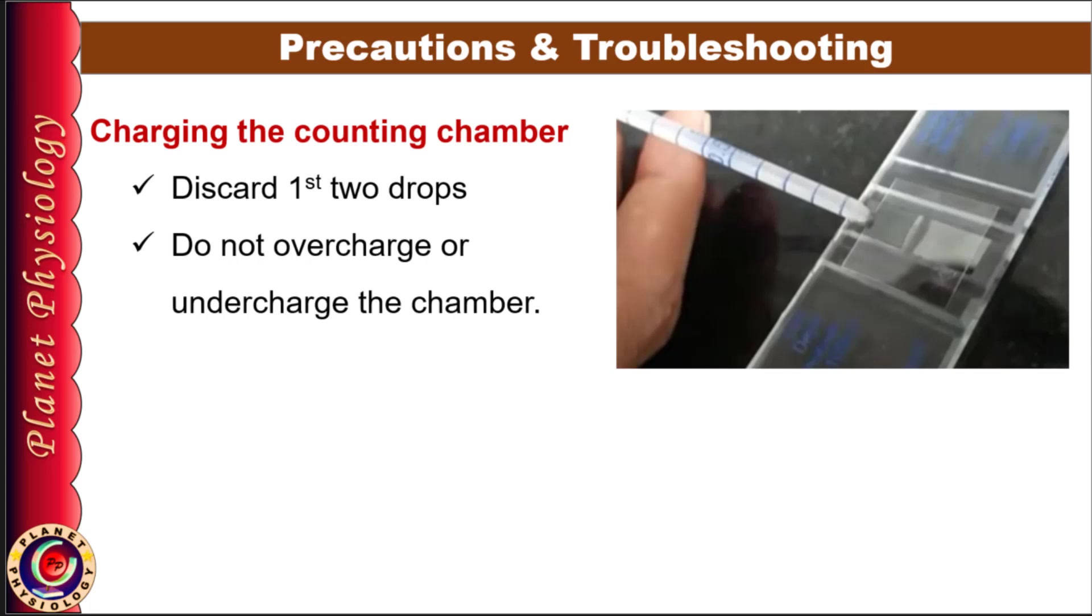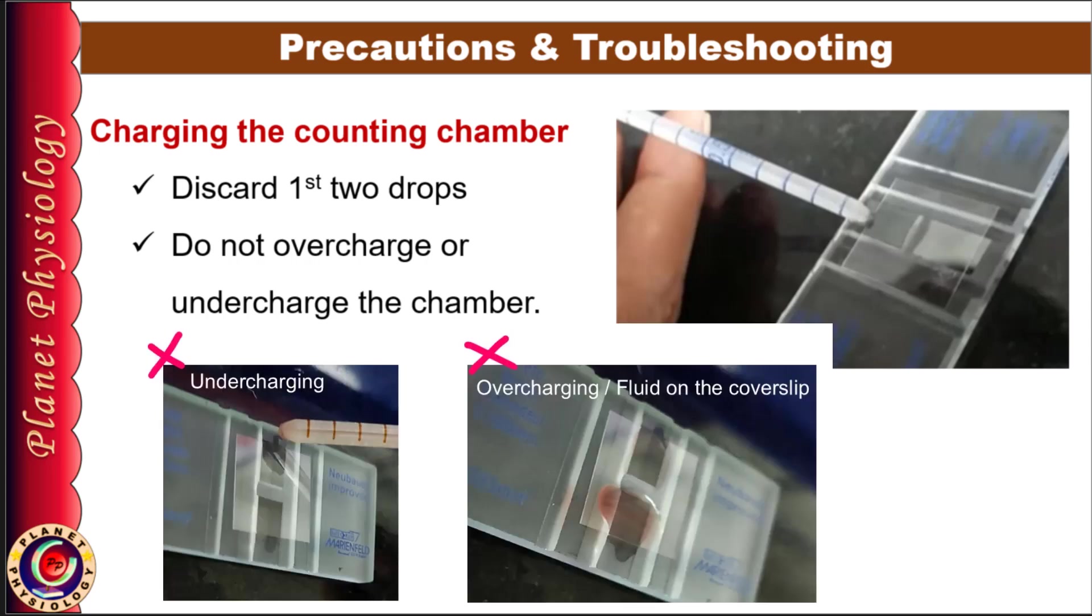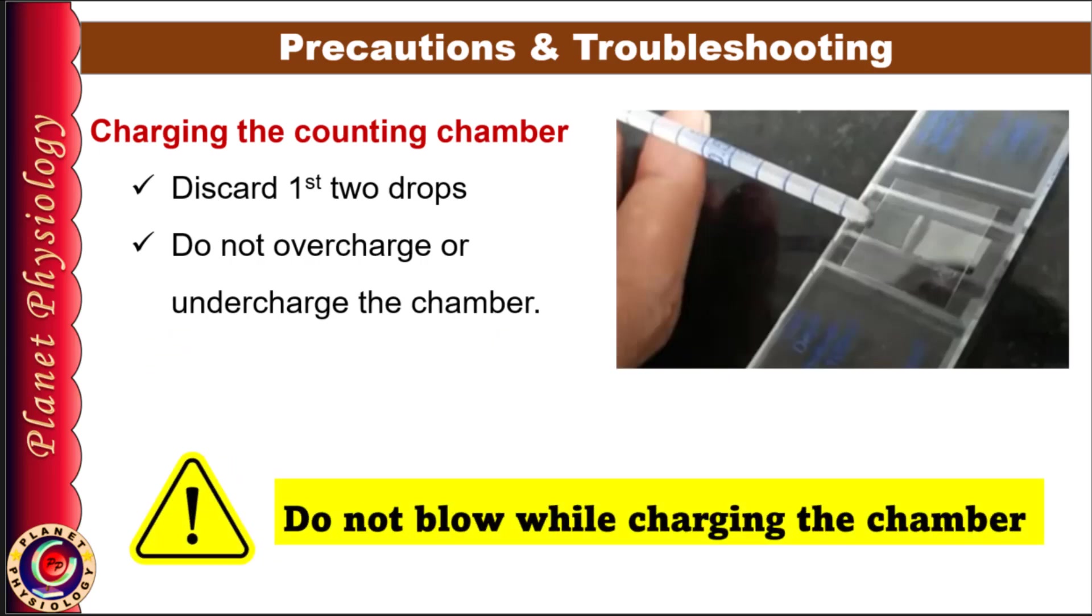Now let's go through some important precautions while charging the chamber. Remember to discard first two drops from the pipette because it mostly contains diluting fluid. Avoid overcharging or undercharging. Overcharging happens if fluid flows into the gutters, while undercharging leaves air bubbles on the counting surface. Both will affect your cell count. Do not blow through the pipette for charging. Blowing can lead to overcharging the chamber. Be gentle and allow fluid to move under the coverslip naturally.